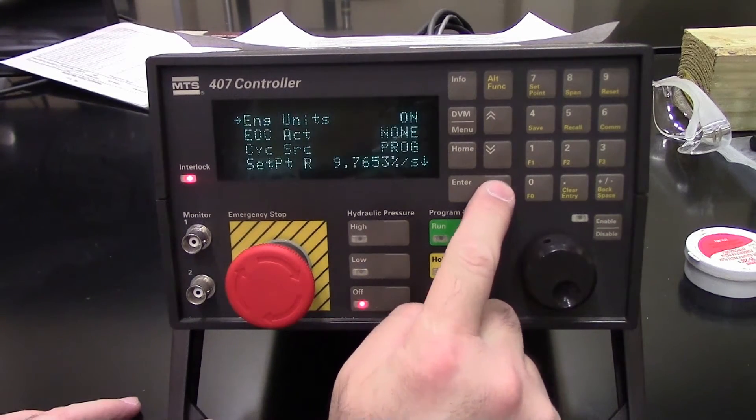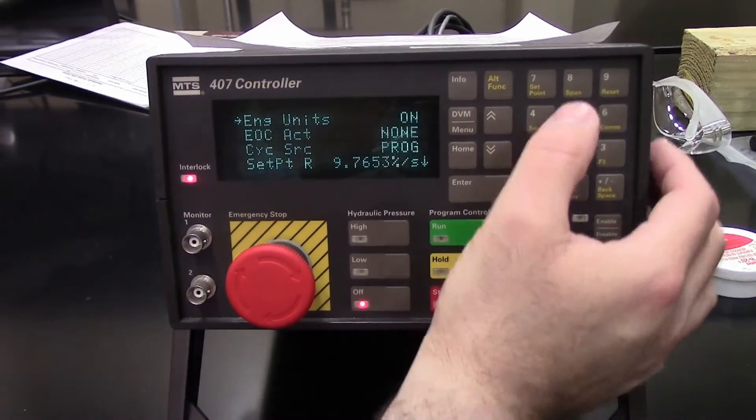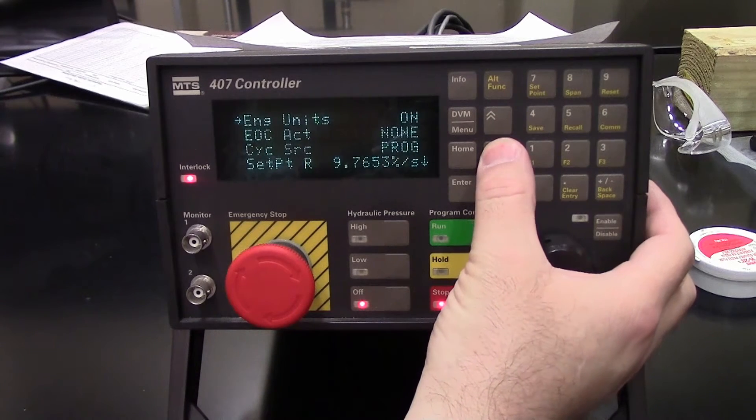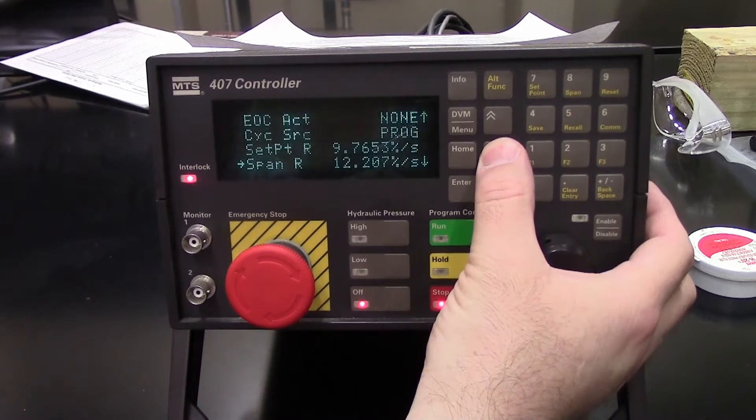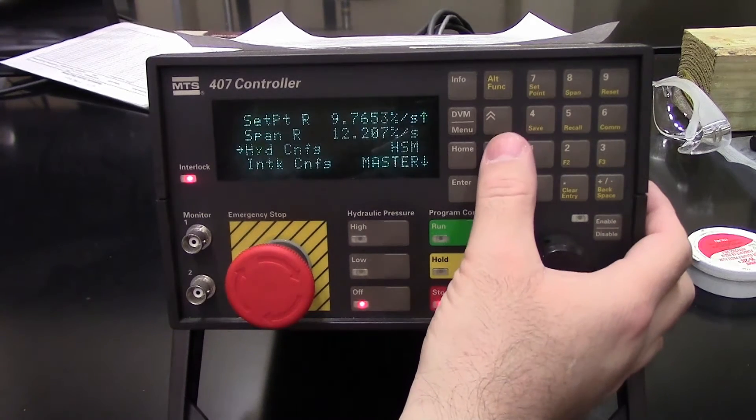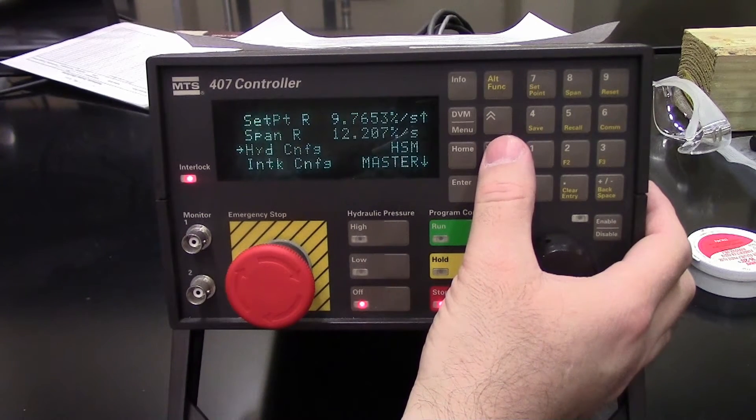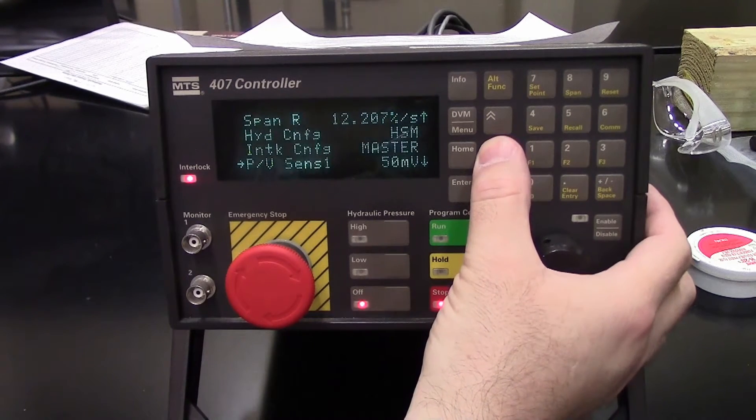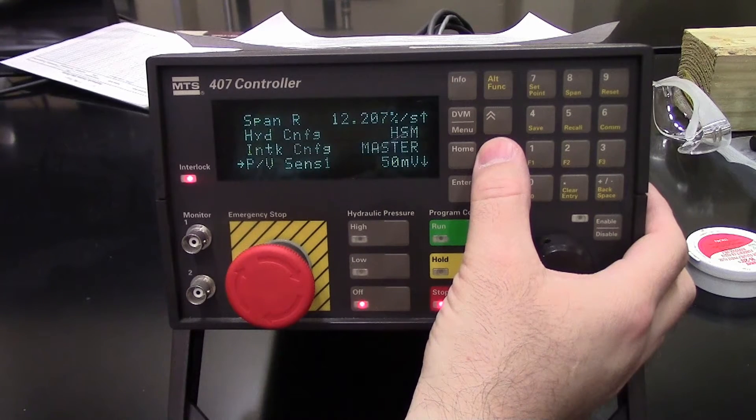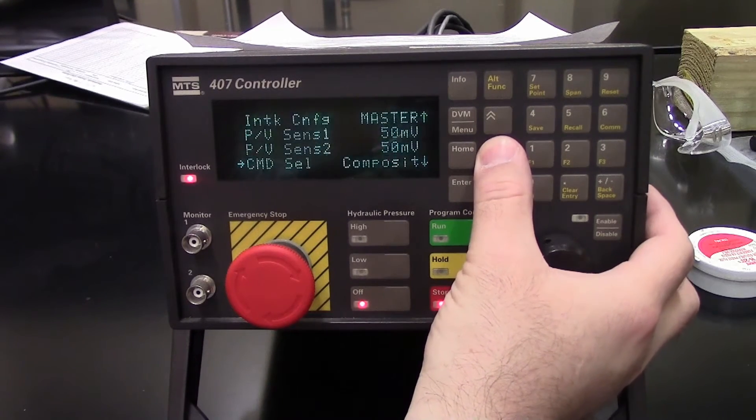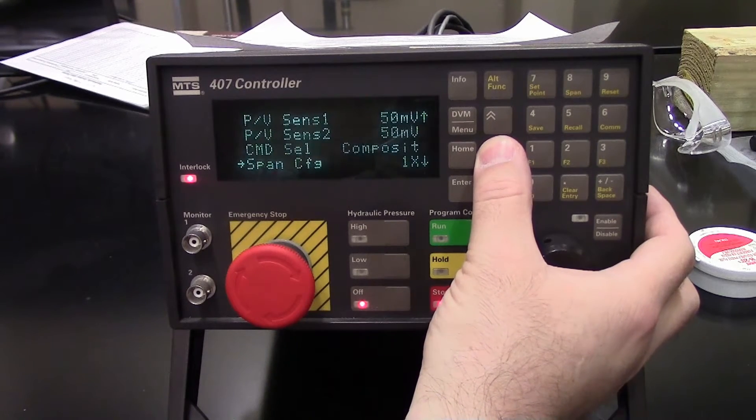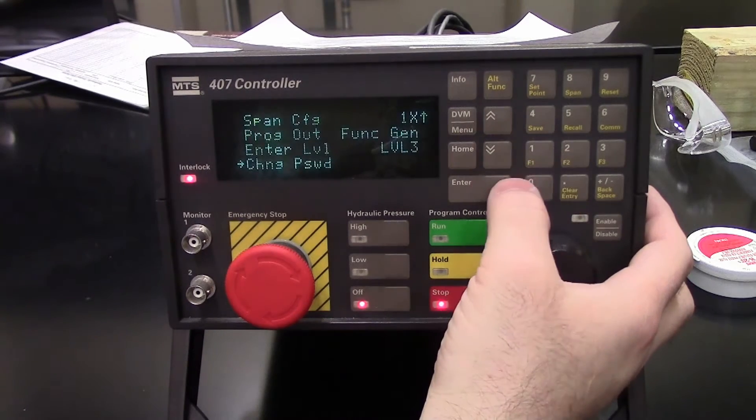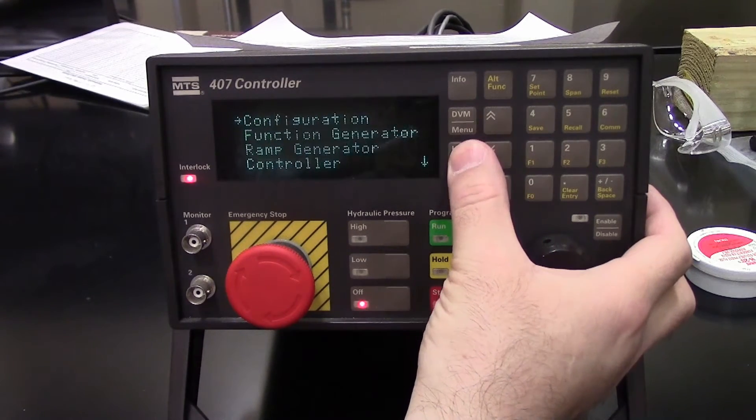Let's go into configuration. I'm not going to describe all of these, I'm just going to scroll through them to kind of document their values. Here's the hydraulic configuration. It's HSM, or hydraulic service manifold. Interlock configuration. Those things depend on your lab, how you have them set up to your pump.